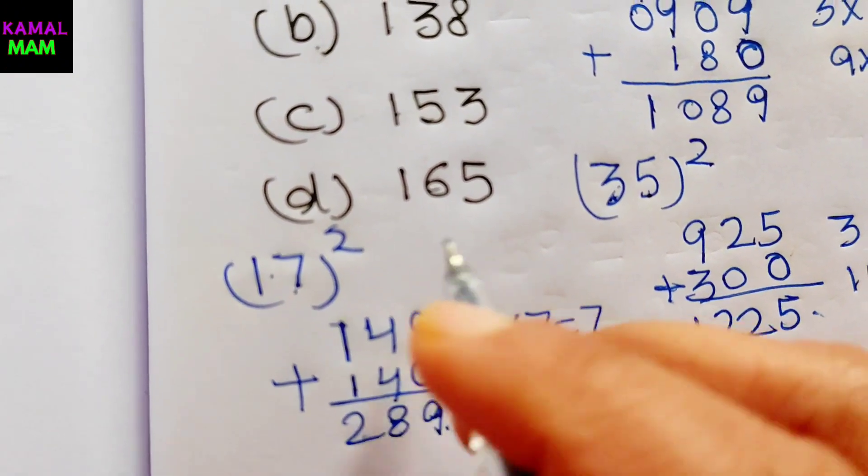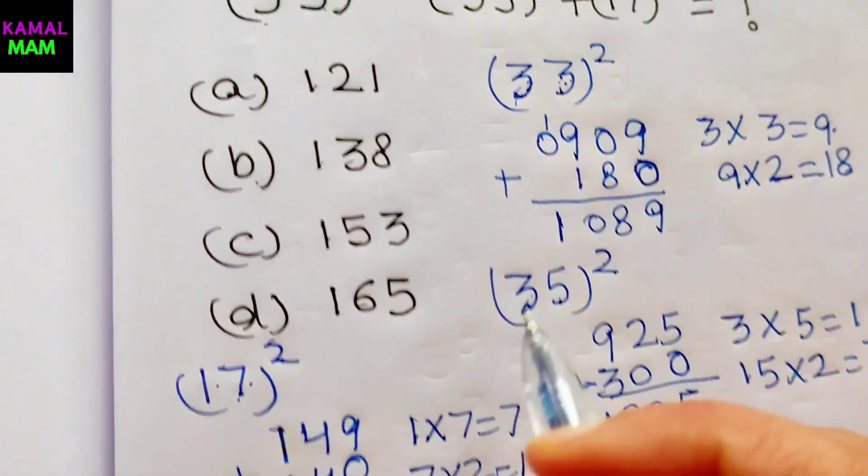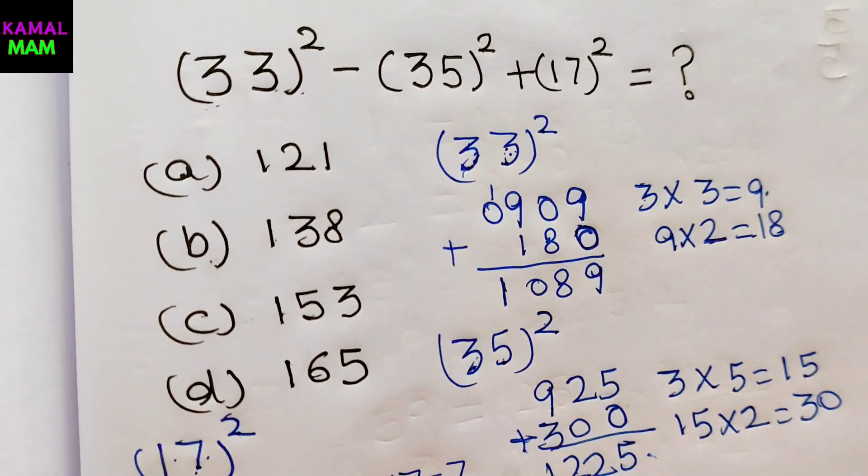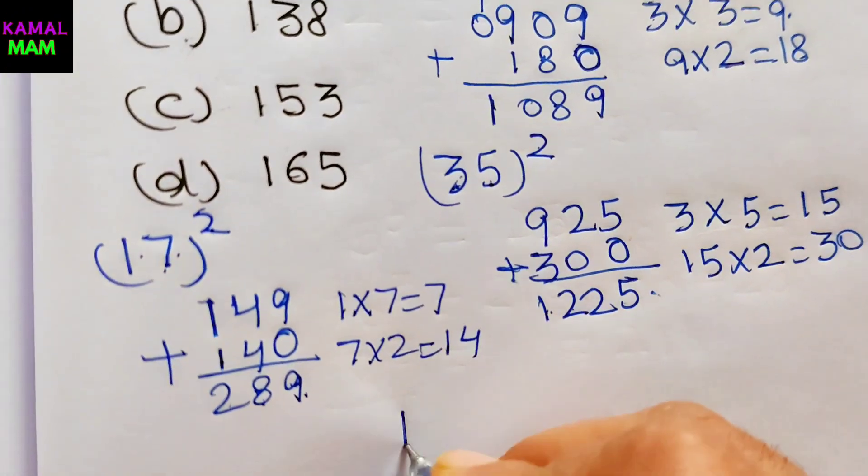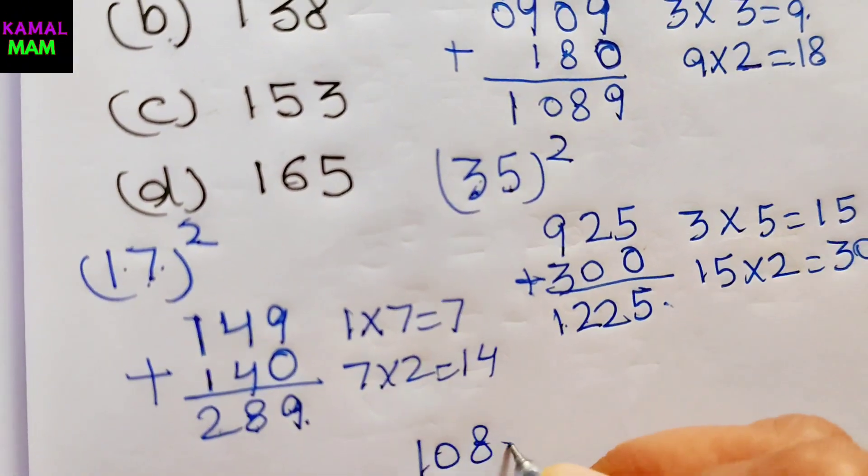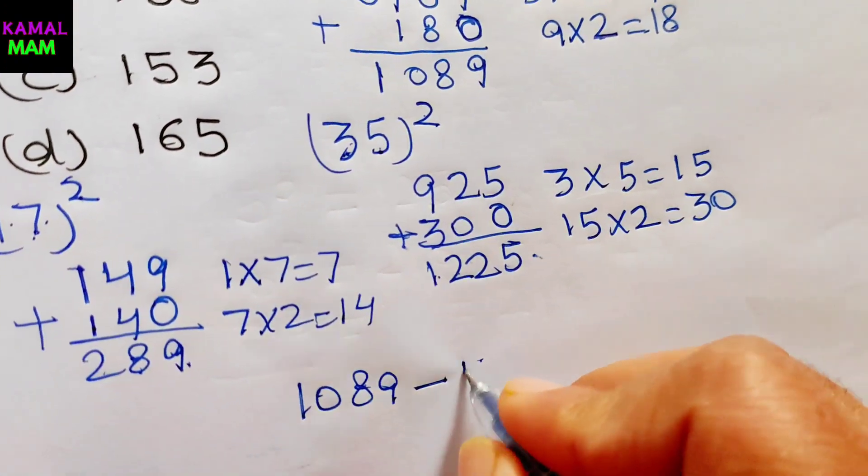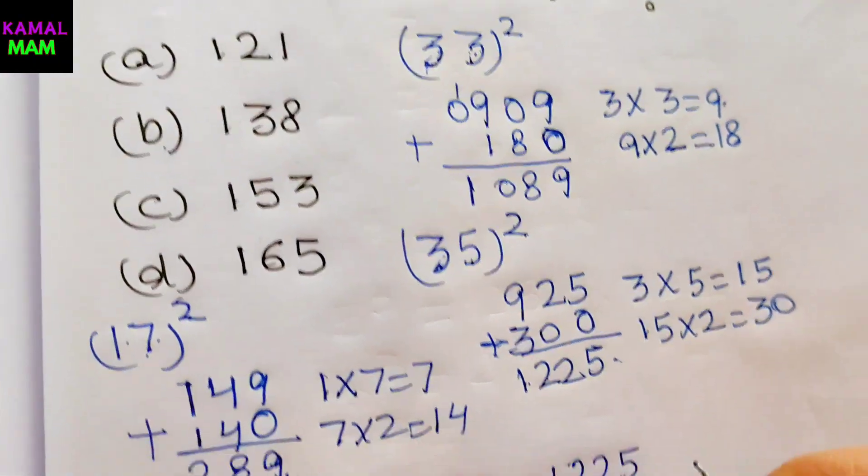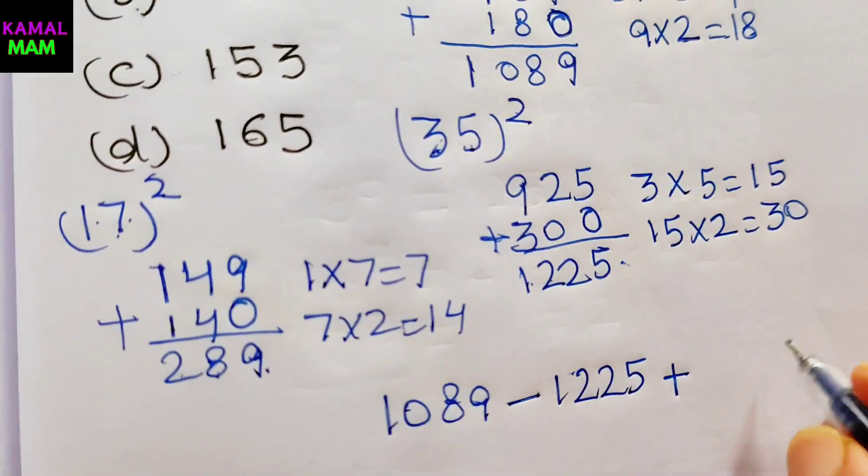Here is 289 for 17 raised to power 2. Now substitute all this value here, we get the answer. Now here 33 raised to power 2, we get it's 1089, then minus 35 raised to power 2, here we get 1225, then plus 17 raised to power 2, plus 289.